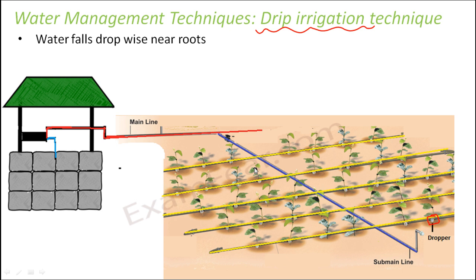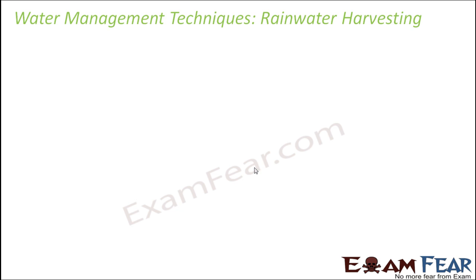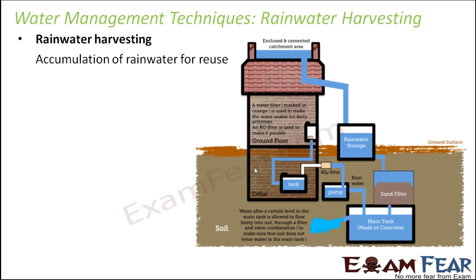Another example of a water management technique is rainwater harvesting. Rainwater is a very important source of water, so how can we utilize it at its best? A lot of rainwater gets wasted — due to construction of buildings, roads, and pavements, most rainwater cannot refill the groundwater because it cannot even reach below the ground.